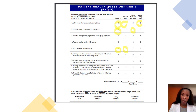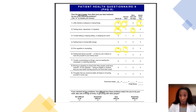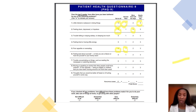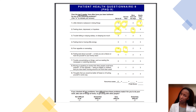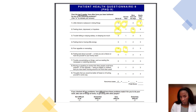The eighth question asks about moving or speaking so slowly that others could have noticed, or the opposite — being so fidgety or restless that you've been moving around more than usual. This could mean you're slouching around with no energy, or you're very hyper and going non-stop. You may not notice it yourself, but someone may have said to you that you seem a little down or seem more active than usual.